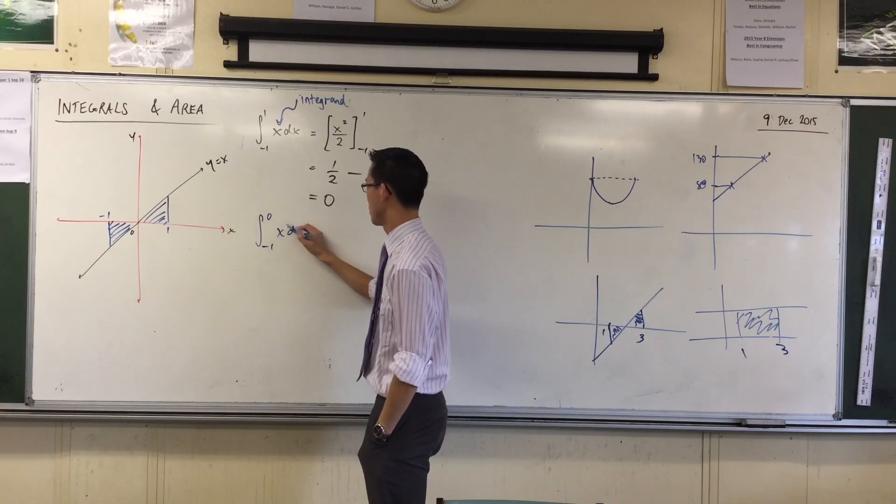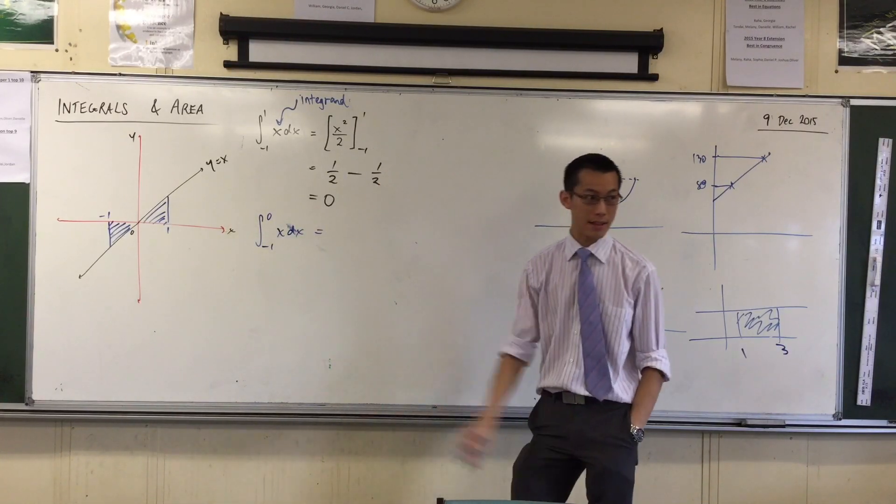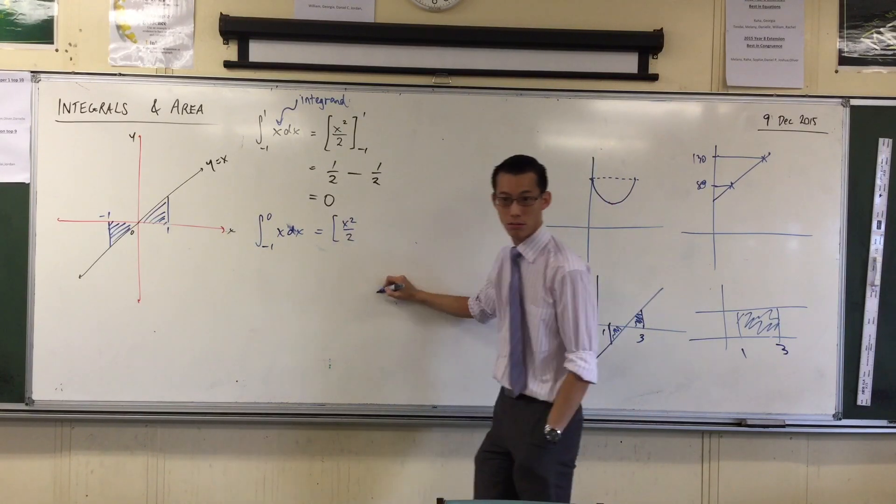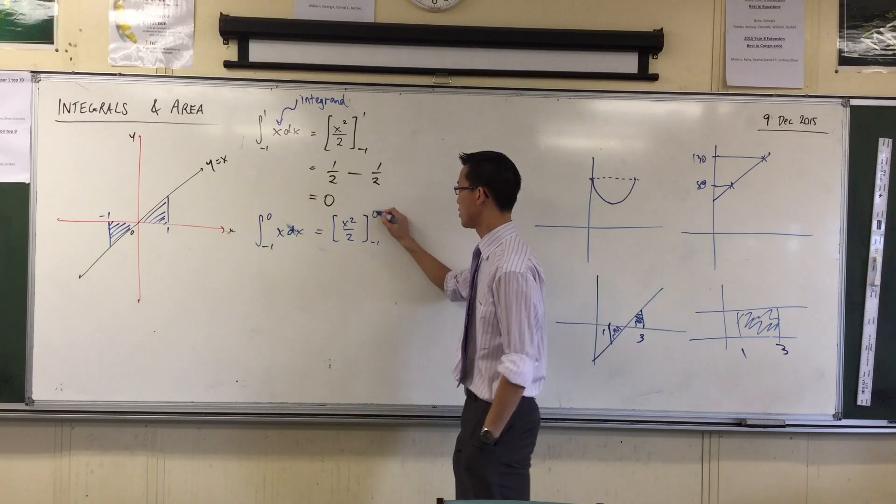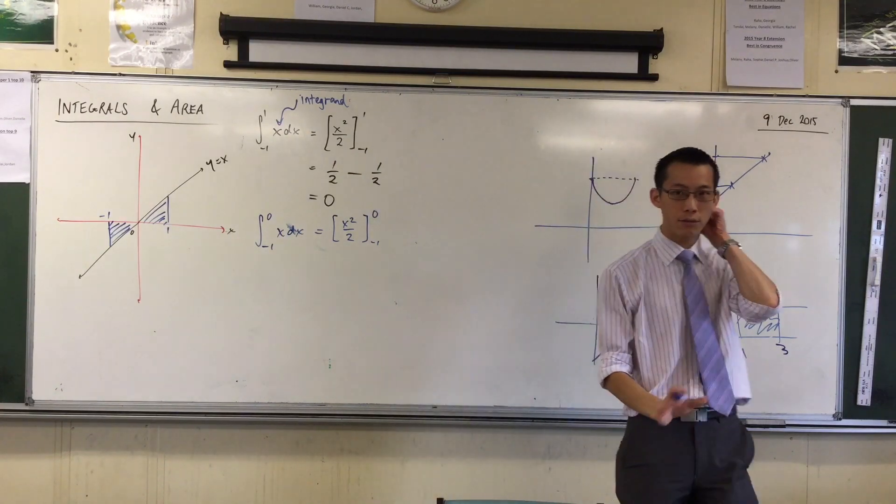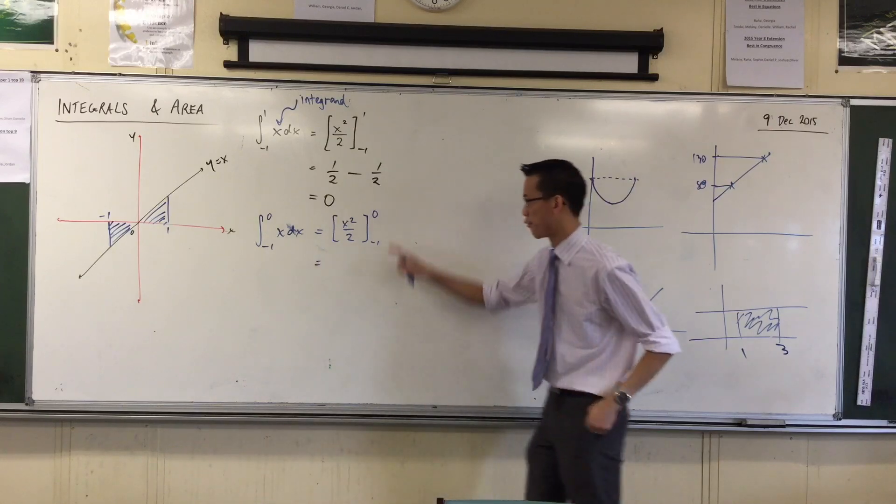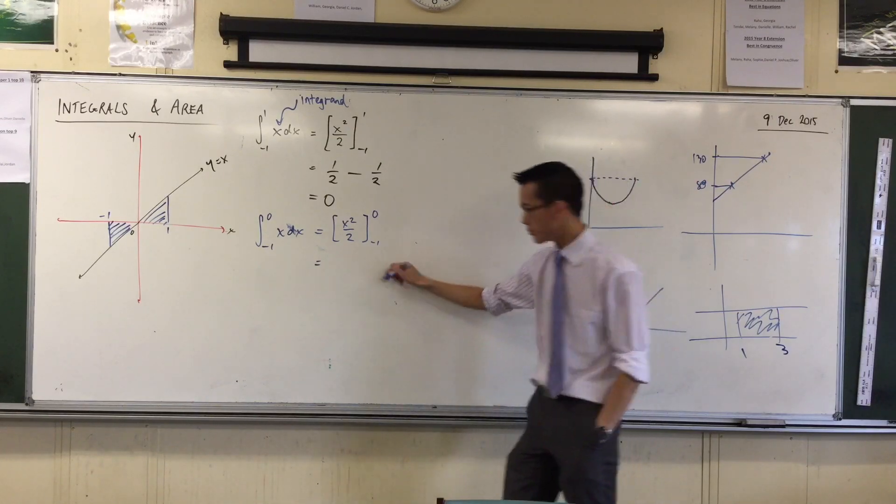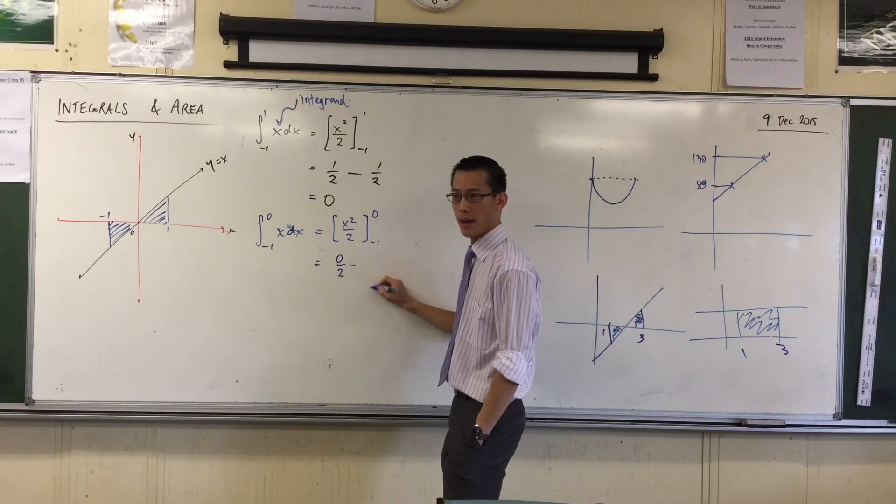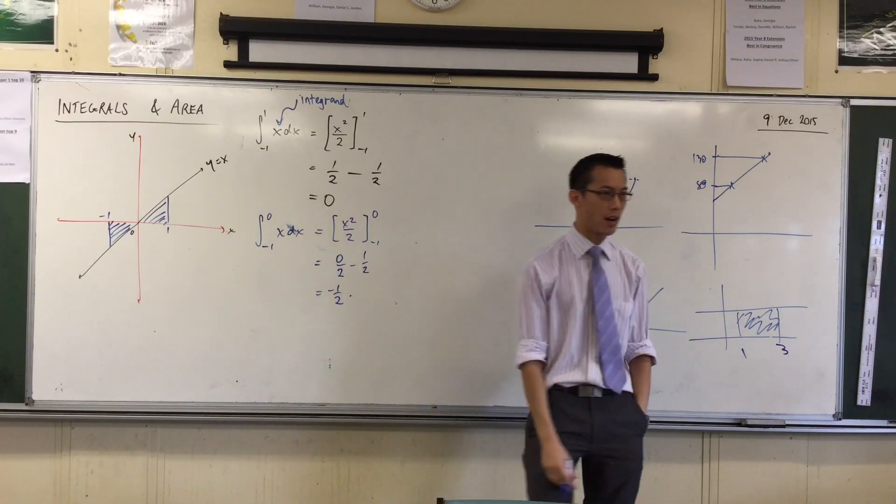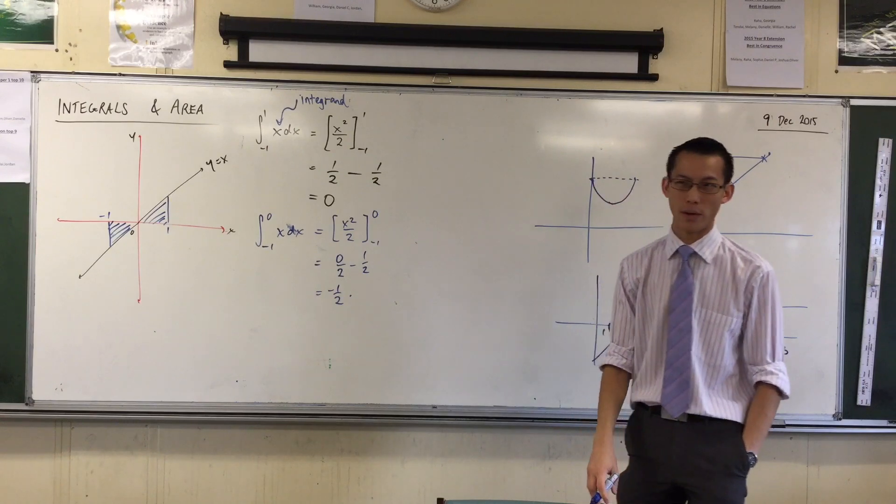My primitive is x squared on two, from negative one to zero. Careful, careful. How do I evaluate this? What's the f of b, what's the f of a? Zero on two, take away, one on two. There's the negative area. Area beneath the axis is probably a better way to say it. So you can see, just by crunching the numbers, integrals are more powerful than just, oh, tell me what the areas of these triangles are.